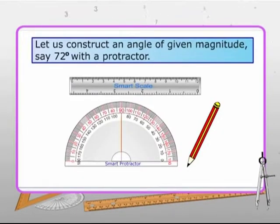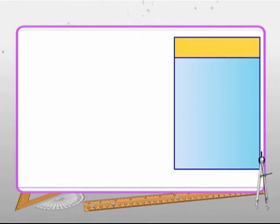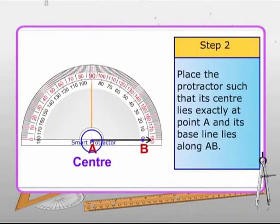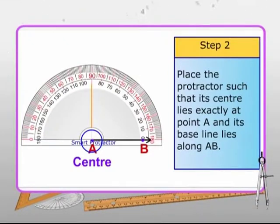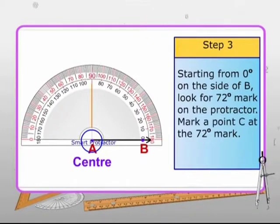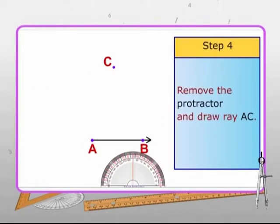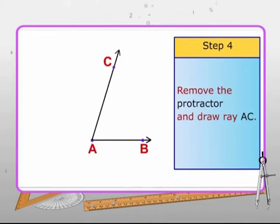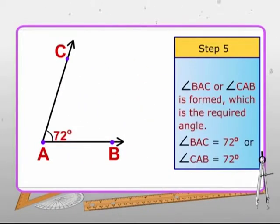Now, let us see another similar construction of an angle of 72 degrees. The steps of construction follows. Step 1: Draw a ray AB. Step 2: Place the protractor such that its center lies exactly at point A and its baseline lies along AB. Step 3: Starting from zero degree on the side of B, look for 72 degrees mark on the protractor. Mark a point C at the 72 degrees mark. Step 4: Remove the protractor and draw ray AC. Angle BAC or angle CAB is the required angle measuring 72 degrees.